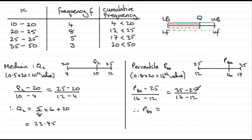So, 35 take away 25 is 10, over 17 take away 12, which is 5.